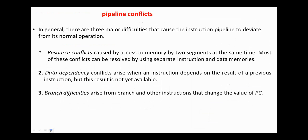Next, pipeline conflicts. In general, there are three major difficulties that cause the instruction pipeline to deviate from its normal operation. First, resource conflicts, caused by access to memory by two segments at the same time — most of these conflicts can be resolved by using separate instruction and data memories. Second, data dependency conflicts, which arise when an instruction depends on the result of a previous instruction but that result is not yet available. Third, branch difficulty, which arises from branch and other instructions that change the value of the program counter.